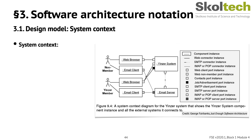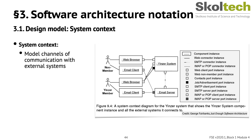The system context diagram is similar to the use case diagram in that it provides an overview of the system and the actors it interacts with. The biggest difference is that functionality is more visible in the use case diagram, while the system context diagram more clearly shows connectors, which represent channels of communication to external systems.